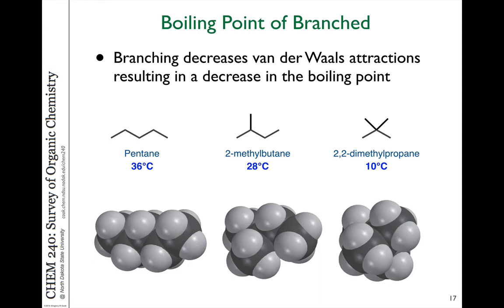These isomers are exactly the same mass — the same number of carbons and hydrogens — however, their boiling points are very different. The linear pentane has the highest boiling point. With one branch, the boiling point drops from 36 degrees to 28 degrees. With the more compact, more highly branched molecule, the boiling point drops to 10 degrees Celsius, due to diminishing van der Waals attractions.